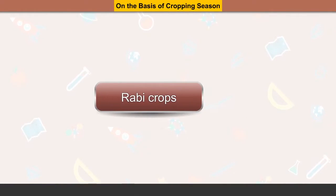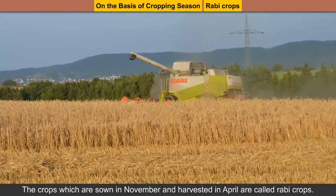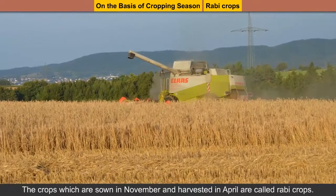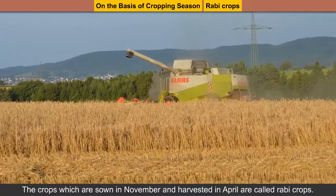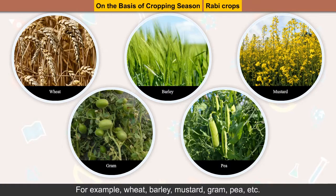Rabi crops: The crops which are sown in November and harvested in April are called Rabi crops. For example, wheat, barley, mustard, gram, pea, etc.